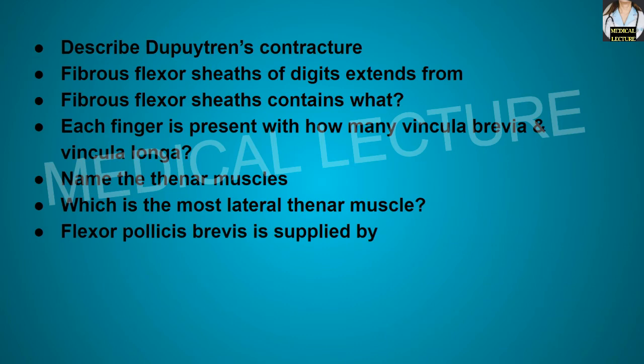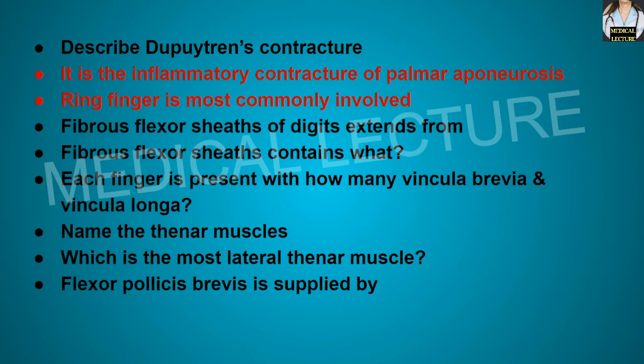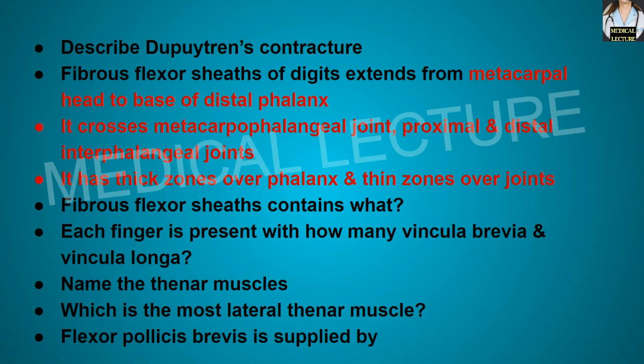Describe Dupuytren's contracture. Dupuytren's contracture is the inflammatory contracture of the palmar aponeurosis. The ring finger is most commonly involved. The fibrous flexor sheath of the digits extends from the metacarpal head to the base of the distal phalanx. It crosses the metacarpophalangeal joint, proximal and distal interphalangeal joints also. It has thick zones over the phalanges and thin zones over the joints.